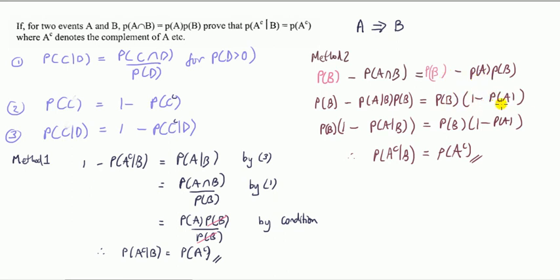And here common factor probability of B comes out as well, and then that gives me one minus that, and then by condition, by three, this is probability of conditional probability of not A given B.